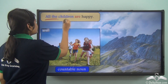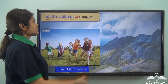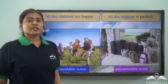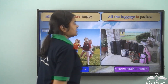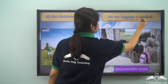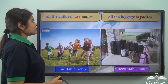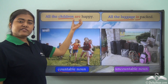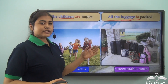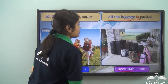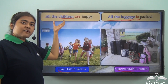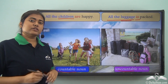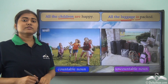'All the children are happy' — here 'all the children' is a plural subject, so 'are' is a plural verb. But 'All the luggage is packed' — 'luggage' is an uncountable noun, so we use the singular verb 'is.' Children is a countable noun, so we use a plural verb; luggage is uncountable, so the verb becomes singular.